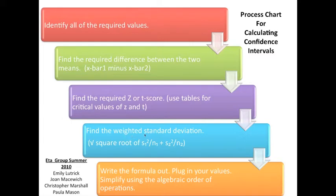Once you do that, you find the weighted standard deviation, which is the square root of s1 squared divided by n1 plus s2 squared divided by n2. Then you put those things into the formula, plug in your values, and simplify using the algebraic order of operations.